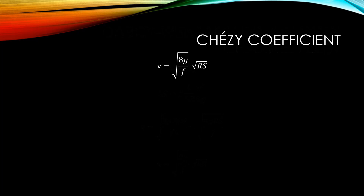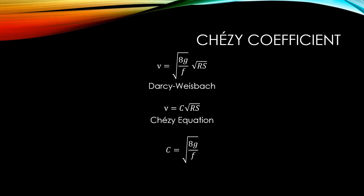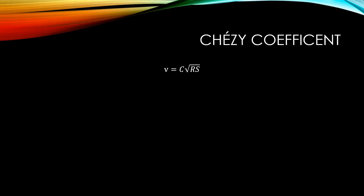We write this expression in this way so that we can compare it to the Chézy equation. The Chézy equation multiplies a coefficient C by the square root of the hydraulic radius times the longitudinal slope. Comparing both equations, we can deduce that this coefficient C is equal to the square root of 8 times gravitational acceleration over friction factor. We typically call this coefficient the Chézy coefficient.